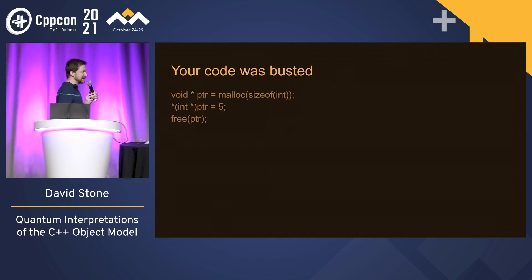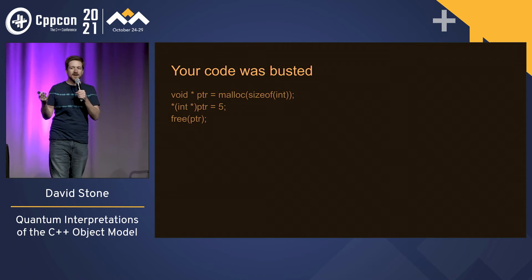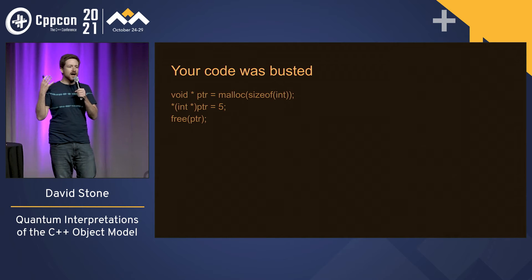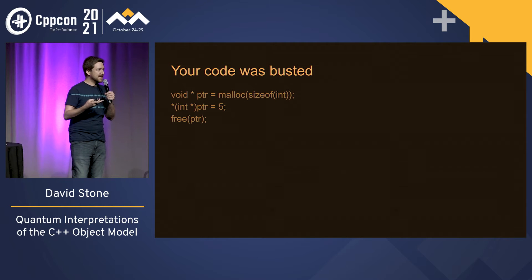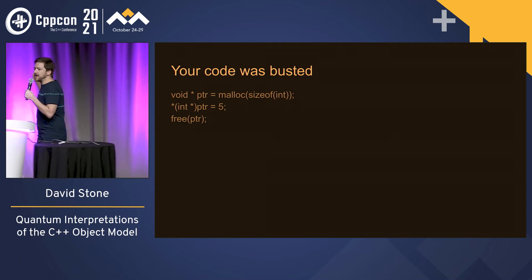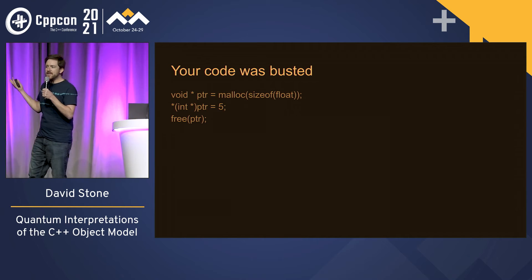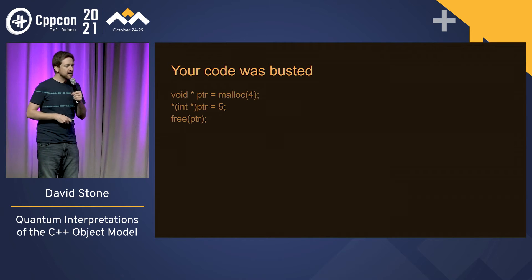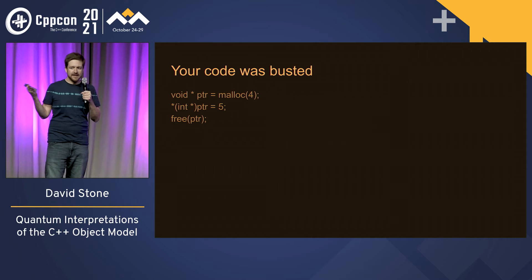Your code was busted prior to C++20. This code here — undefined behavior. The reason it was undefined behavior was because malloc created allocated memory, but there weren't actually any objects there. You're just assigning an int to some memory. Malloc has no way of knowing that you're trying to do an int — you could have said size of float, you could have said four. How does malloc know that there should be ints there? It doesn't.